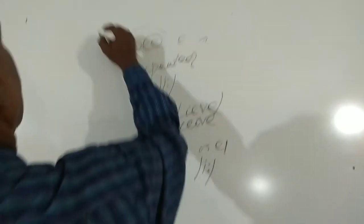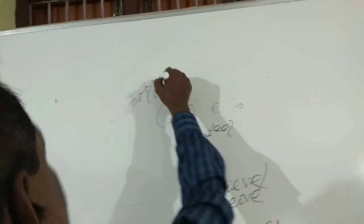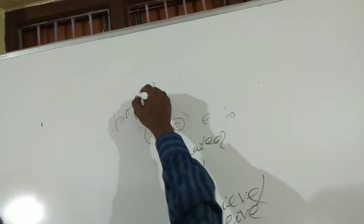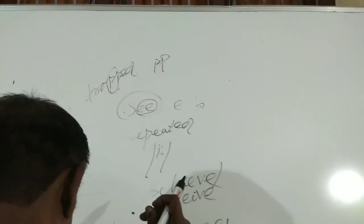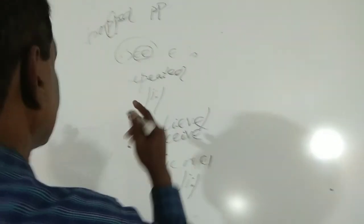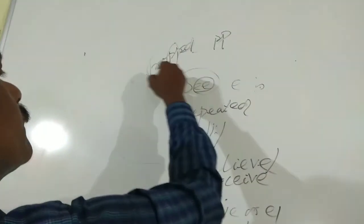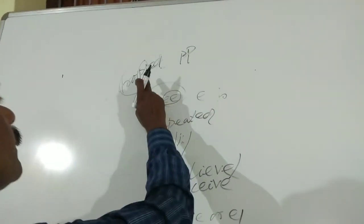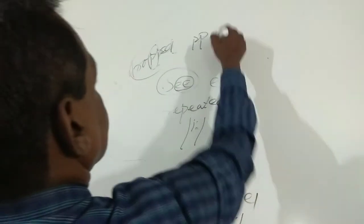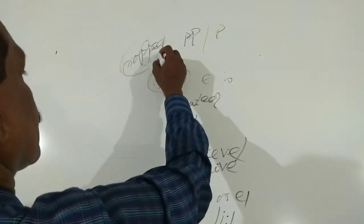Similarly, in the spelling of the word 'dropped,' one finds two consonants — P and P — but in pronunciation, when I utter 'dropped,' it is represented by only a single consonant P. So when I say 'dropped,' I take the sound of a single P. Therefore spelling and pronunciation can differ significantly.